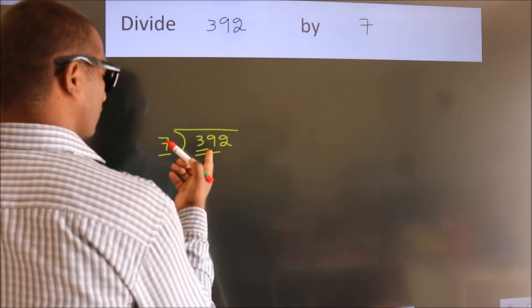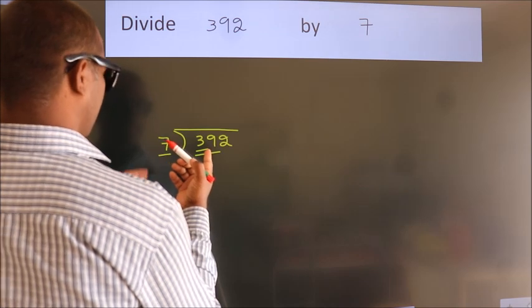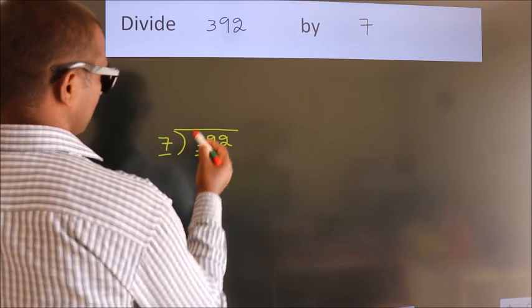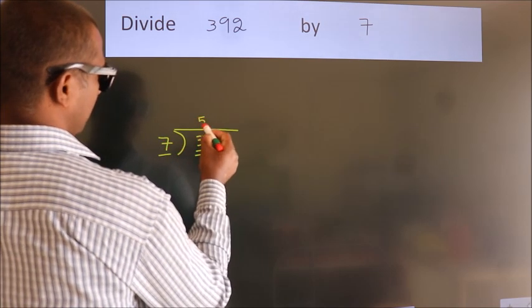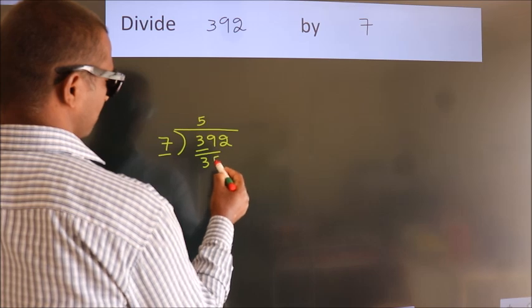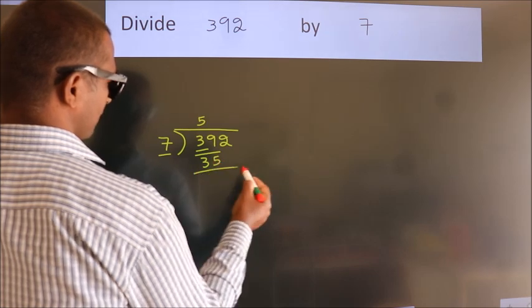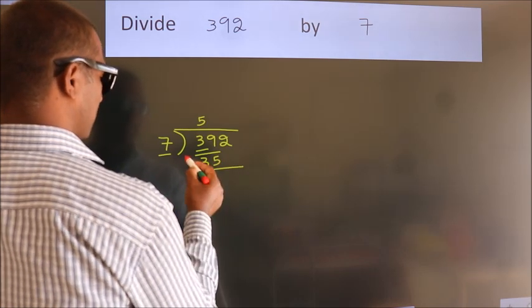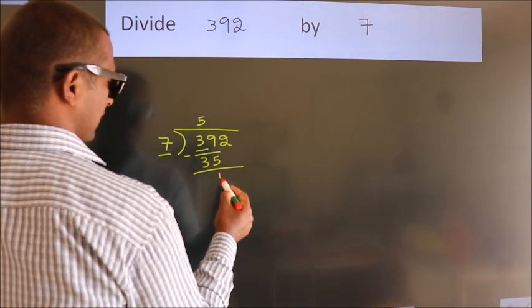A number close to 39 in the 7 table is 7 fives, 35. Now we should subtract. We get 4.